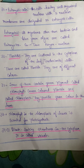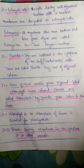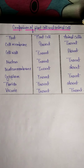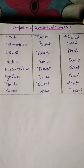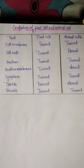Point 39: The blank-looking structure in the cytoplasm is called a vacuole. Now, a comparison of plant cells and animal cells — cell membrane: present in plant cells and also present in animal cells.